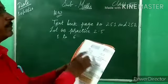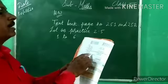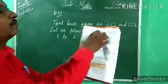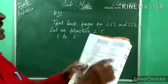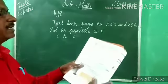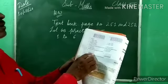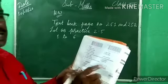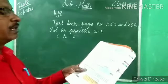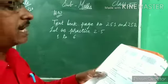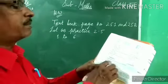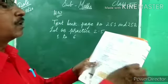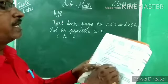Fourth: arrange in column and subtract the smaller number from the bigger number. Bada number upar le ke, chota number niche likh ke, minus karna hai. Fifth: check the following subtraction by addition — second aur third term add karo. Agar first aata hai toh answer is correct, ya phir agar answer alag hai toh 'different from the first number, so the answer is incorrect.'